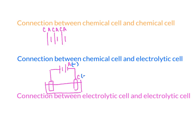From PANCAKE, the cathode in an electrolytic cell is negative. So between a chemical cell and an electrolytic cell, the negative terminal will point towards the negative — negative to negative, positive to positive. But within the same type of cell, the arrangement will be positive, negative, positive, negative alternating.